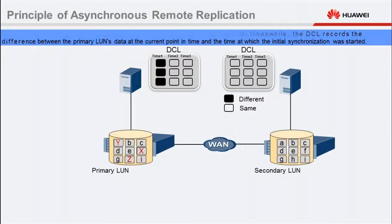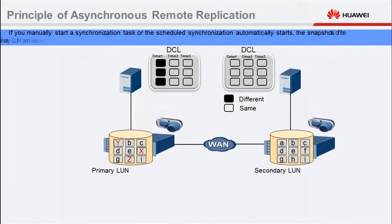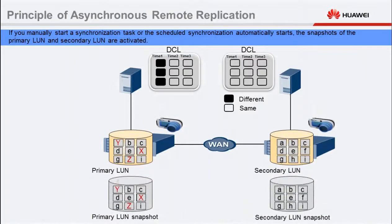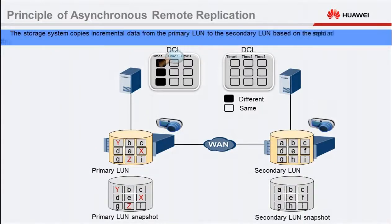If you manually start a synchronization task or the scheduled synchronization automatically starts, the snapshots of the primary LUN and the secondary LUN are activated. The storage system copies incremental data from the primary LUN to the secondary LUN based on the snapshot and DCL of the primary LUN.